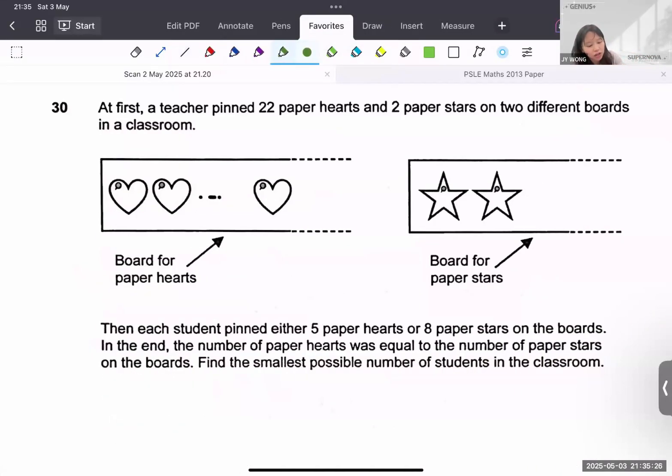At first, a teacher pinned 22 paper hearts and 2 paper stars on two different boards in the classroom. Then each student pinned either 5 paper hearts or 8 paper stars. They can only choose either the hearts or the stars.